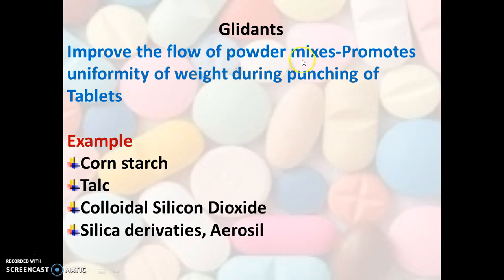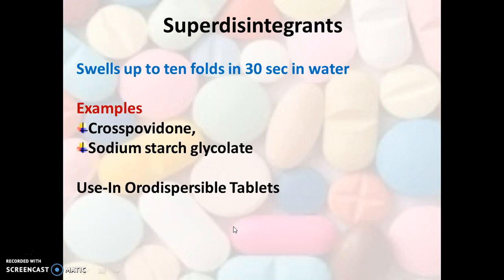Next are glidants, which improve the flow property of powder mixes and are therefore very important for the uniformity of tablet weight. Examples are corn starch, talc, colloidal silicon dioxide, and silica derivatives such as Aerosil.